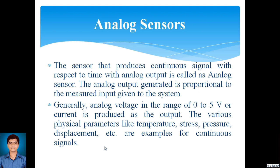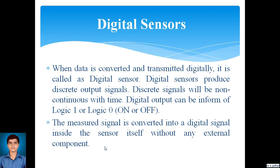The next type is the digital sensor. When data is converted and transmitted digitally, it is called a digital sensor. Digital sensors produce discrete output signals — non-continuous with time. The digital output can be in the form of logic one or logic zero, or on and off. On-off pulses are produced from which we can determine the measured quantities. The measured signal is converted into a digital signal inside the sensor itself without any external component. Even if the change is continuous, it can be converted by the sensor into digital form.